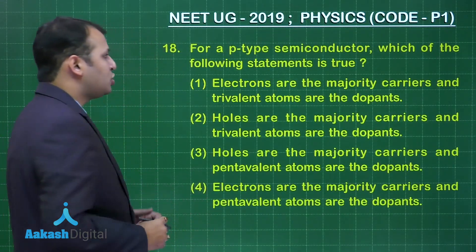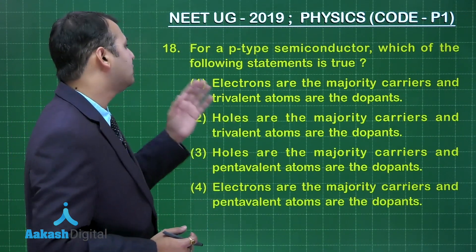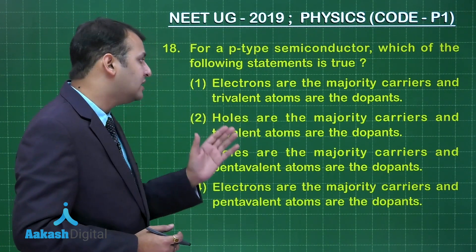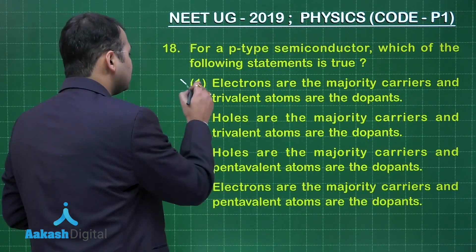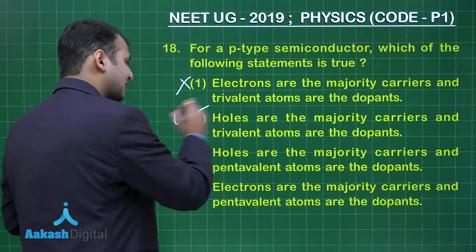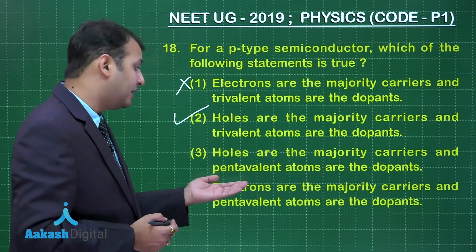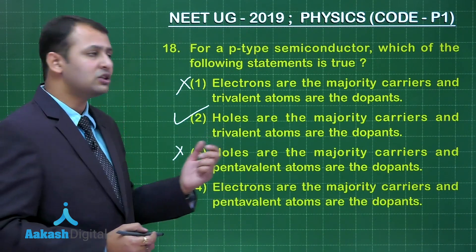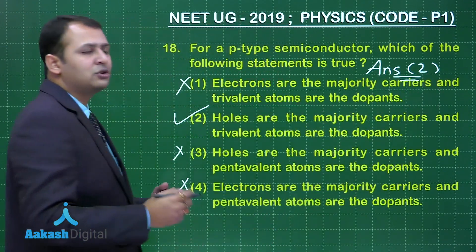The question belongs to section of semiconductors. It's a pretty easy question. For a p-type semiconductor, which of the following statements is true? Number one, electrons are the majority carriers and trivalent atoms are the dopants. In p-type, electrons are not the majority carriers. This is wrong. Second statement, holes are the majority carriers and trivalent atoms are the dopants. Yes, it is correct. So certainly the next two will be wrong. The answer to this question would be option number 2. Hope you have understood the question very well.